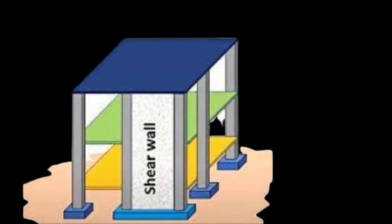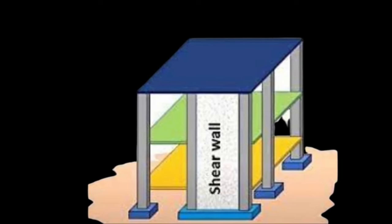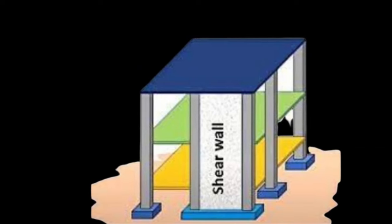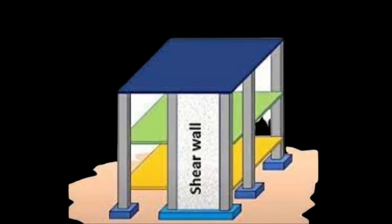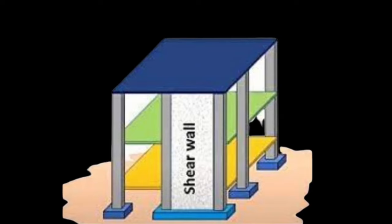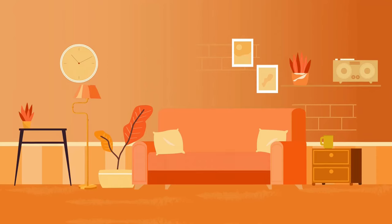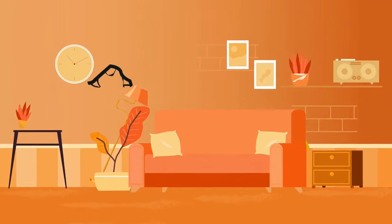There is no guarantee a shear wall will keep a building from collapse. What we do is seismic resistant design. We are designing only for a part of the actual expected seismic forces. We don't design earthquake-proof structures, we design earthquake-resistant structures.